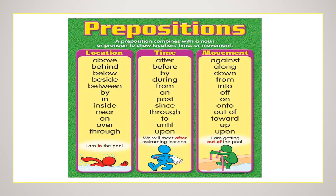Next one is prepositions. A preposition combines with a noun or pronoun to show location, time, or moment. It shows the exact position of an object or its relation with the noun. For example: above, behind, below, beside, between, by, in, inside, near, on, over, through, after, before. For example in sentences: I am in the pool. We will meet after swimming lessons. I am getting out of the pool. Here, 'in', 'after', and 'out of' are prepositions.